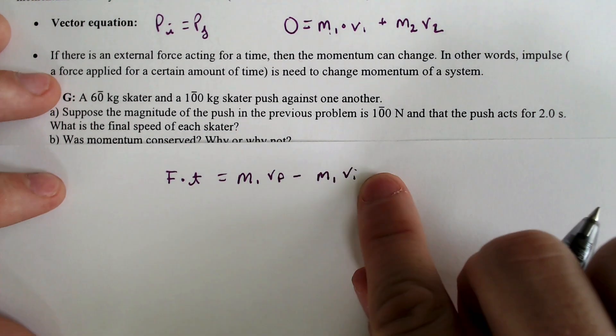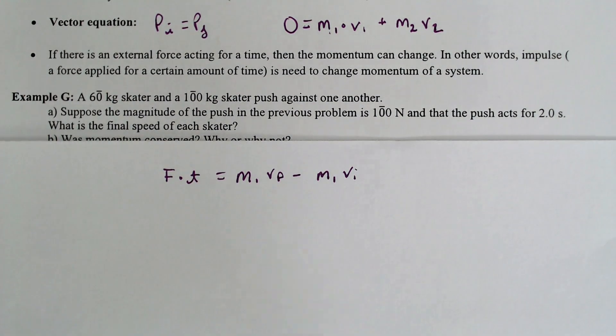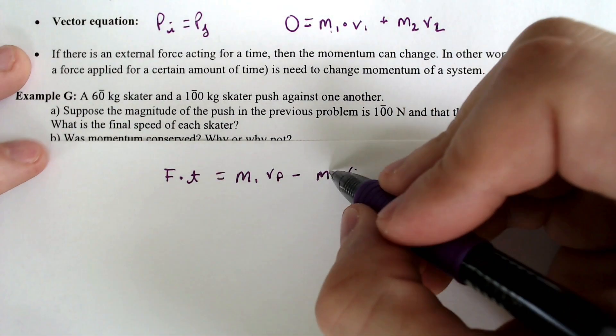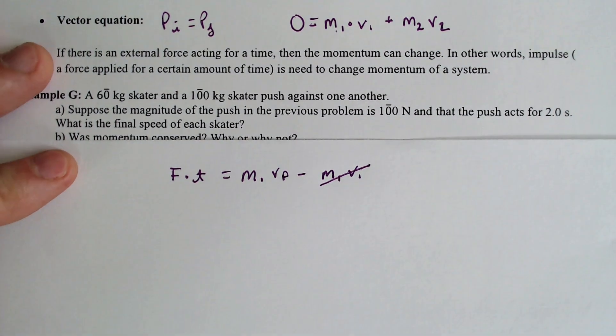So we're just dealing with an impulse here. The initial velocity was zero. These guys started at rest. They were like hugging each other, skating next to each other, pushing up against each other, and then they started at rest, so that would be zero.